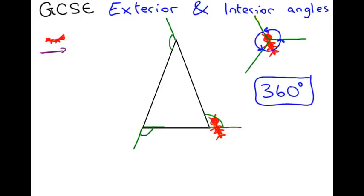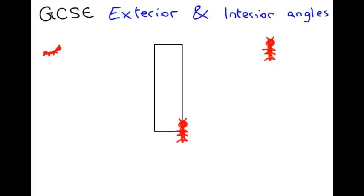So, this angle one, two, three, must add up to 360 degrees. I want us to try that with a different shape. Maybe it's just triangles that it works with. So, let's look at a rectangle.